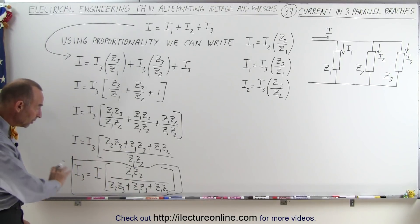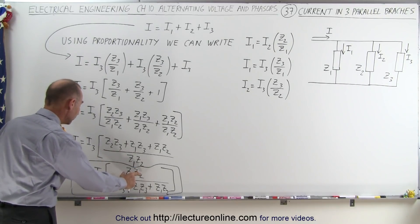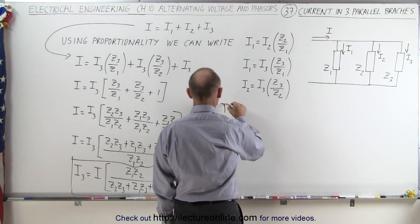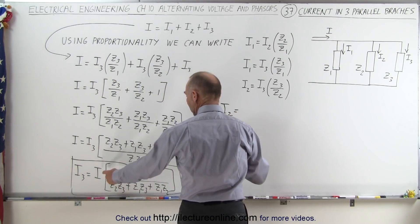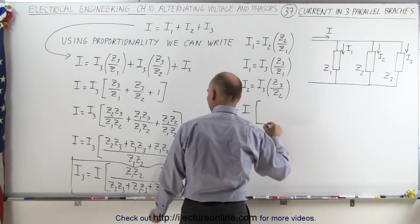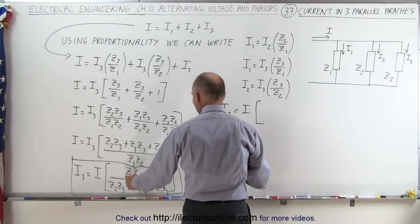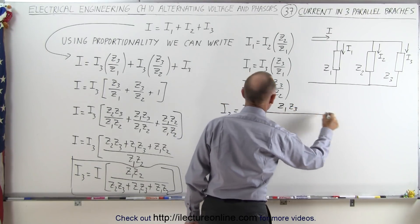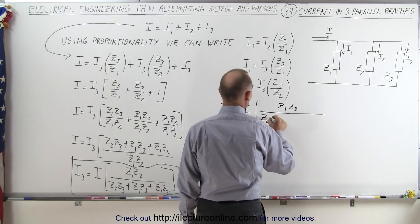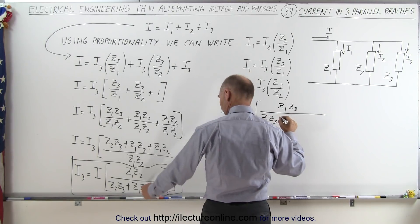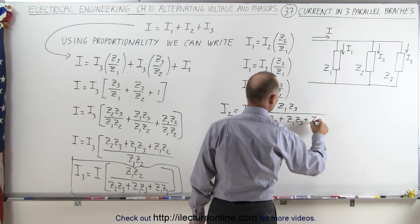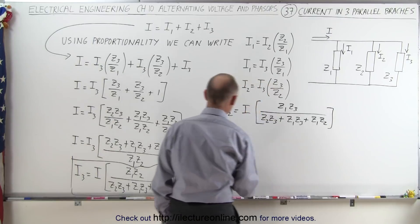Then as you see the pattern, the denominators will always be the same, and the numerators will be the product of the impedances of the other two branches that you're not considering. So therefore, you can say that I2 is going to be equal to the total current I times, the numerator will be Z1 times Z3, the other two impedances, divided by Z2 Z3 plus Z1 Z3 plus Z1 Z2.